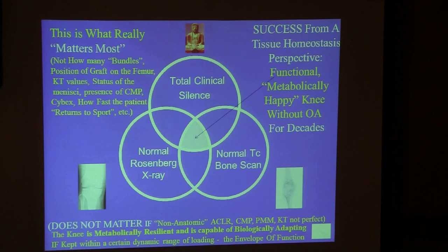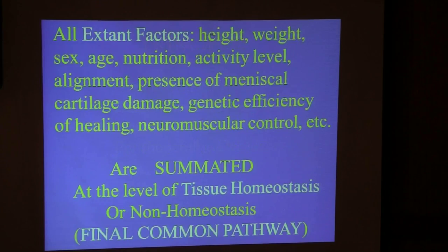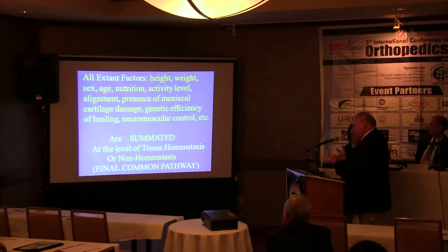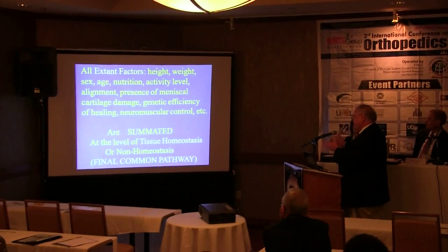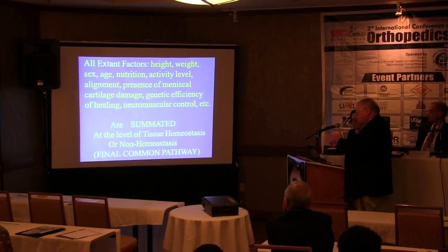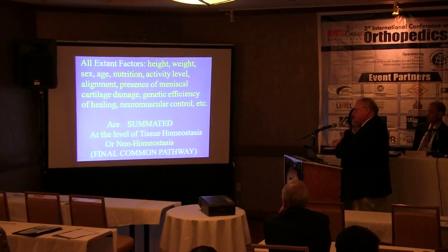The double bundle technique is showing early arthritic changes that are worse — 20% failures at two years. You don't need anatomic reconstruction because the knee is metabolically forgiving. The principle: achieve and maintain tissue and joint homeostasis with associated pain-free function. All extant factors of any joint — height, weight, sex, age, nutrition, activity level, alignment — are summated at the level of tissue homeostasis or non-homeostasis.